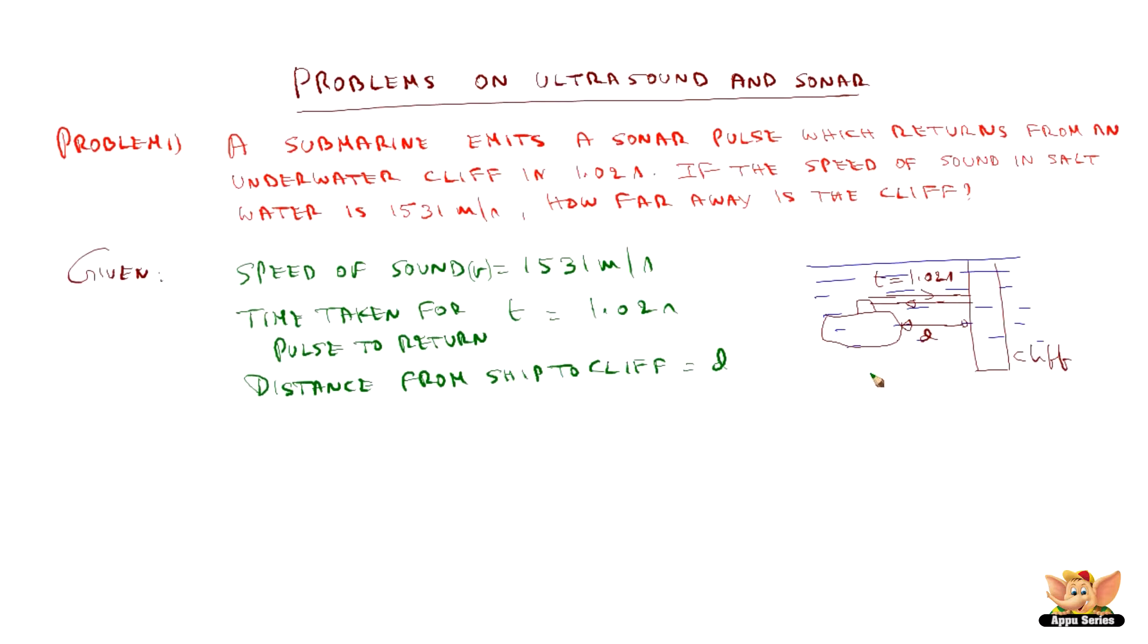The distance is V into T. But the T here is for traveling up and back from sonar to cliff and cliff to sonar. So the distance which we get is also twice. That is why this becomes 2D is V into T which is in this case 1531 into 1.02 which gives 780.81 meter. So the distance between the sonar and the cliff is 780.81 meter.